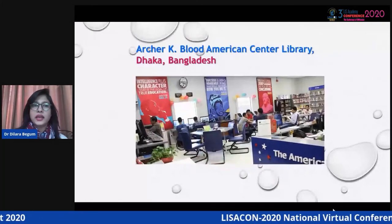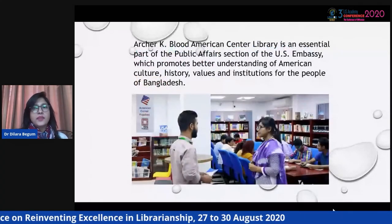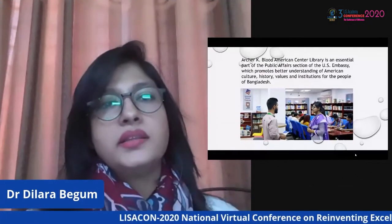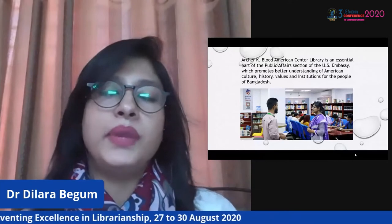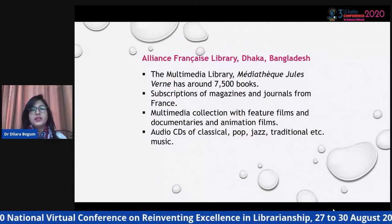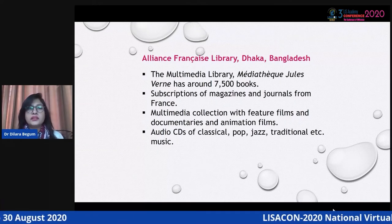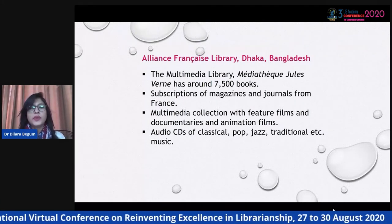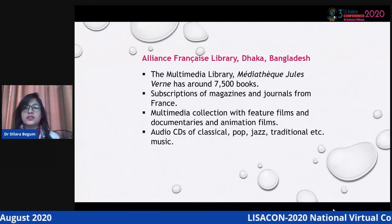The R.K. Blatt American Center Library in Dhaka, Bangladesh is an essential part of the public affairs section of the US Embassy. This center promotes better understanding of American culture, history, values, and institutions for the people of Bangladesh. There is also the Alliance Française Library in Dhaka, Bangladesh. Their resources include around 7,500 books, magazines, and journals from France — promoting French culture — along with a multimedia collection of feature films, documentaries, animation films, and music series covering classical, pop, jazz, traditional, and other genres.